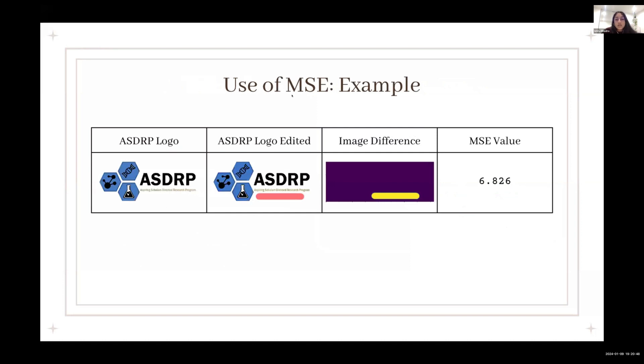So here's the use of the mean square error algorithm on the ASDRP logo. The output of the program was the image difference and the mean square error value, which is 6.826.